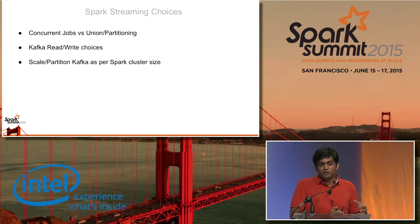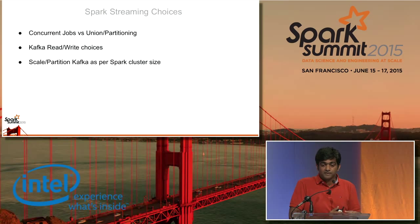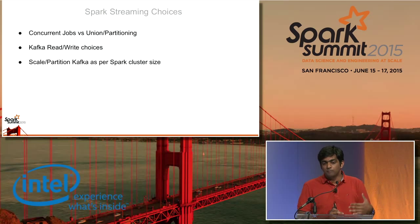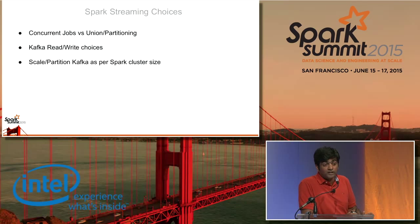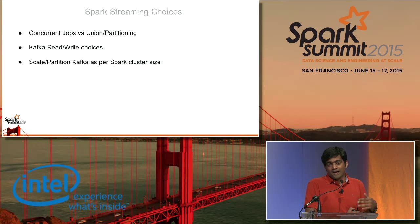The first thing we looked at was concurrent jobs versus union and repartition. This was using the Kafka receiver-based API, not the receiver-less parallel pull API that was discussed separately. With the receiver-based approach, data was still being pulled in by a single receiver — we had multiple receivers to pull data in. We tried concurrent jobs versus unioning the DStreams and repartitioning. We ended up having to repartition the data to ensure all executors were being used in processing, because partitioning in the receiver-based Spark streaming API is based on when data comes in rather than how many partitions the data is pulled from — so it's not a true indicator of parallelism.